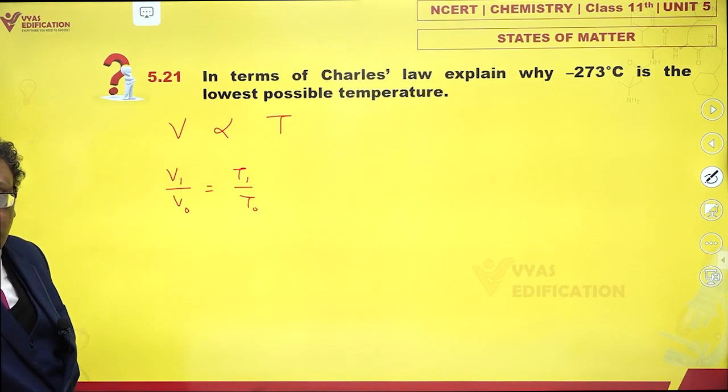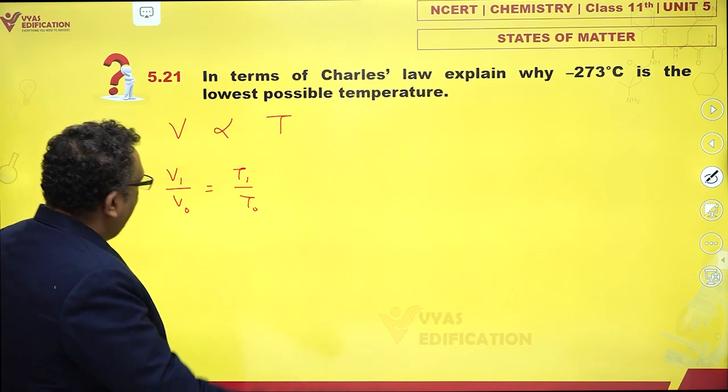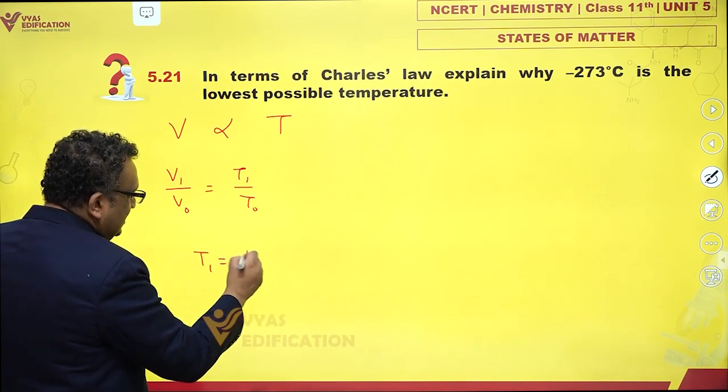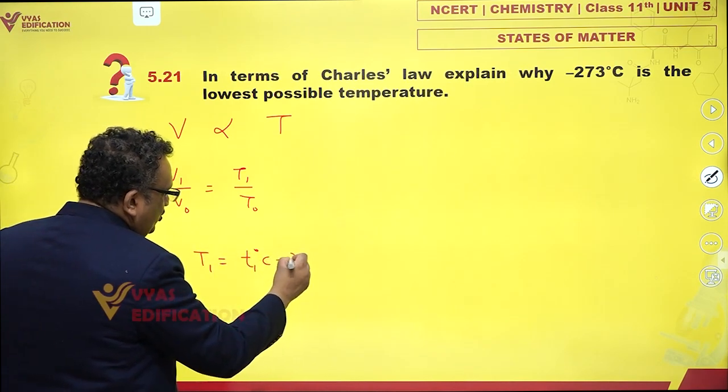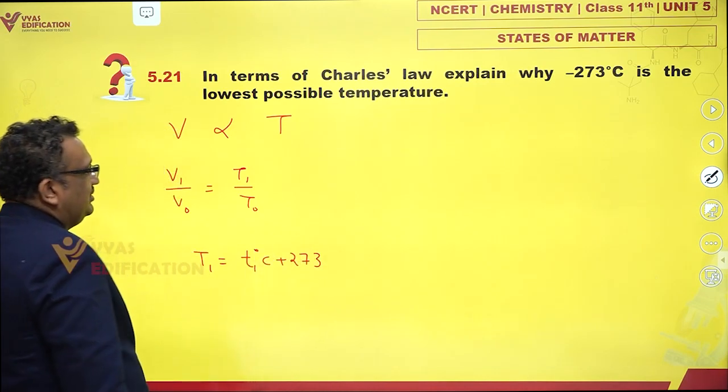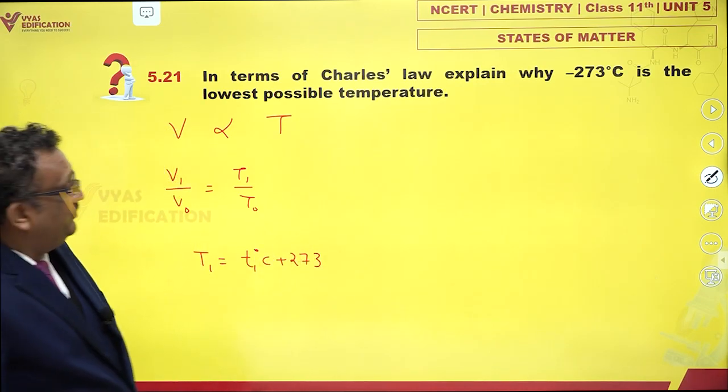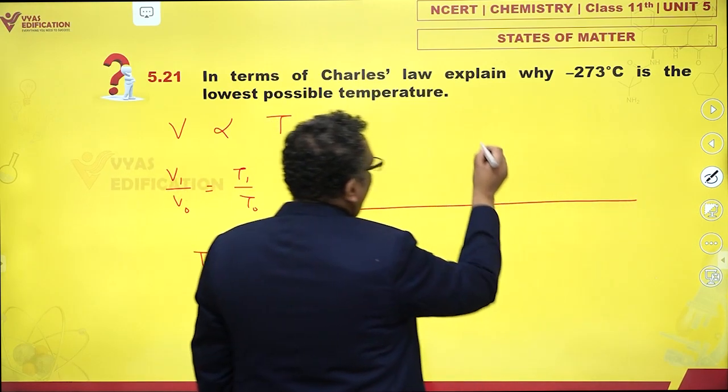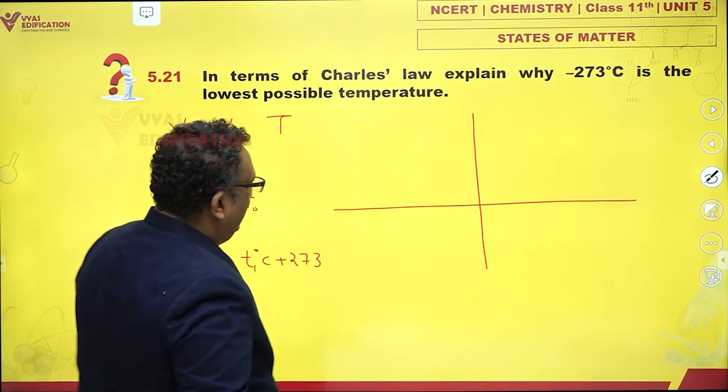Can we plot this graphically? Yes, we can. And instead of absolute temperature T1, this is T1 degrees Celsius plus 273, you could also take like this. Very interesting. If you plot this graphically, you get very interesting points.